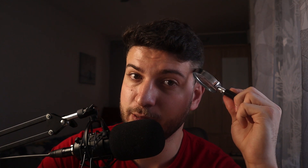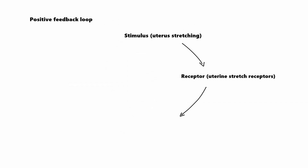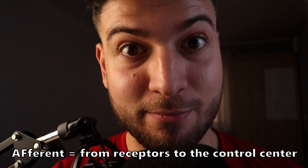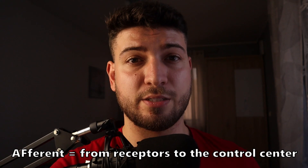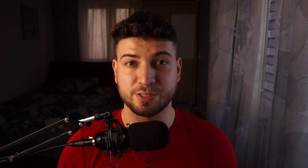Let's say, for example, that you're about to deliver a baby. The baby pushes against the cervix, and stretching of the uterus is the stimulus. The stretch receptors send information about that to your control center — aka, your brain. And guess what the neural pathway is called? Afferent, because it's important AF. Remember: afferent goes from the receptors to the control center.